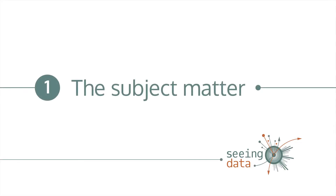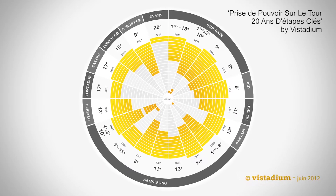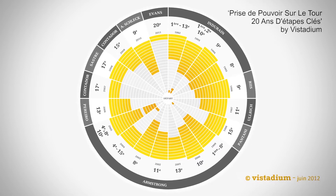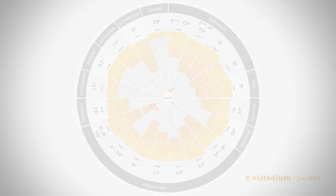Number one: the subject matter. The content of a visualisation is really important. If you're passionate about the Tour de France, you might be more likely to be interested in statistics about cyclists and visual representations of these statistics. When you interact with a visualisation, sometimes you bring relevant information with you and this helps you to make sense of it. So if you're not interested in the subject matter, you're unlikely to take the time to look at a visualisation about it.